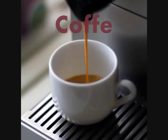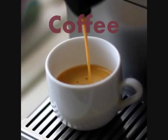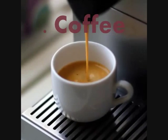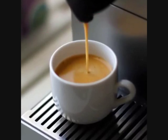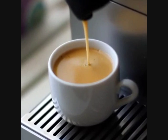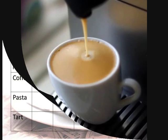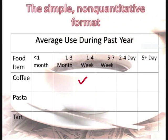For example, if you drink coffee one to four weeks in a year and you were given the simple format, you just put a check under your time — one to four weeks.